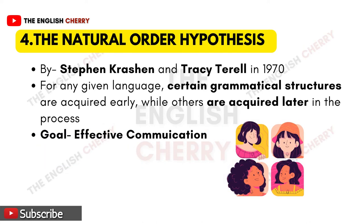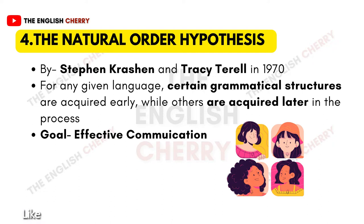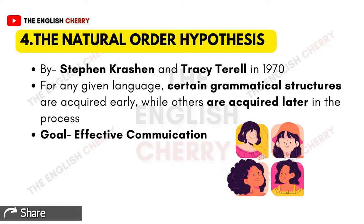The fourth is the natural order hypothesis. This hypothesis was first put forward by Stephen Krashen and Tracy Terrell in 1970, and it says that for any given language, certain grammatical structures are acquired earlier while others are acquired later. This is the natural order of acquisition, where you are acquiring the target language the way you speak in your friend circle — there is no bondage of rules. This is all done to achieve the goal of effective communication, and it allows teachers to talk directly in the target language so that more creative opportunities for language acquisition are created.